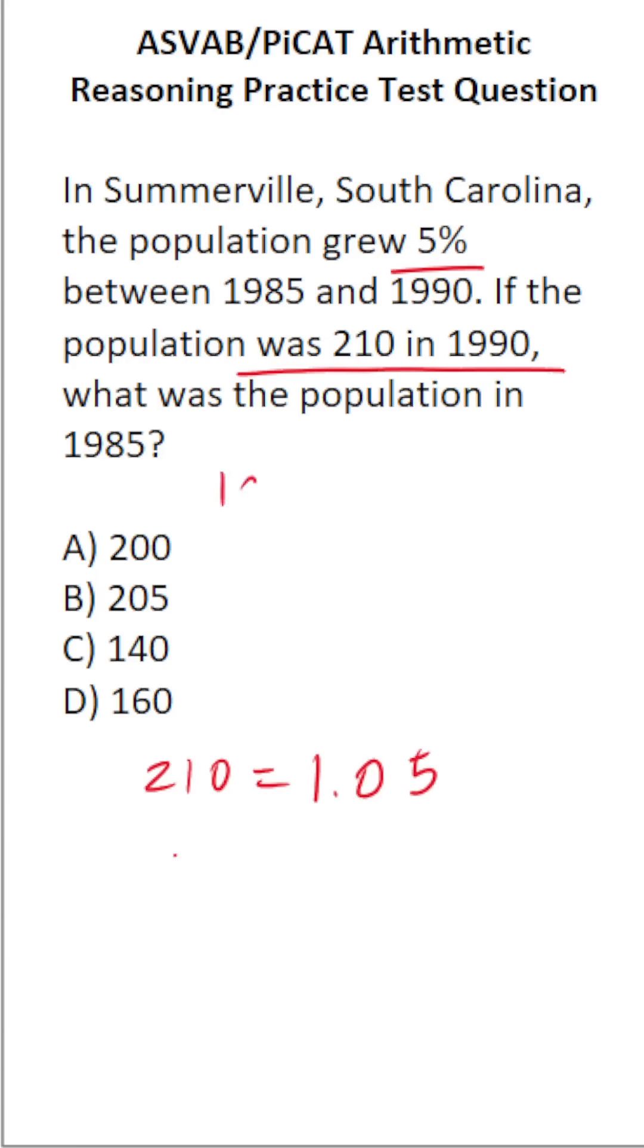If I said to you, how do you represent 105% as a decimal? You would say that's equivalent to 1.05, which is what I put down there, of its population in 1985. That's unknown, so we'll call that X.